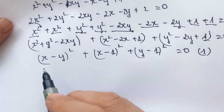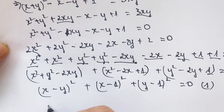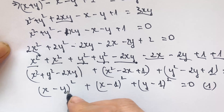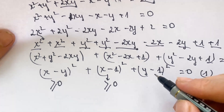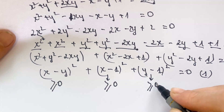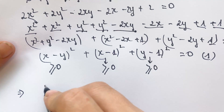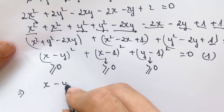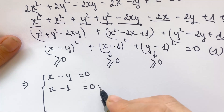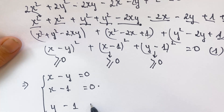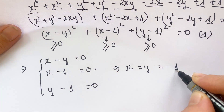Let this be equation 1. Everyone can see — because x and y are natural numbers — therefore, (x minus y) squared is also greater than or equal to 0, and (x minus 1) squared is also greater than or equal to 0, and (y minus 1) squared is also equal to 0. Therefore, just to have the value: x minus y equals 0, and y minus 1 equals 0 too. Therefore, we can say x equals y equals 1.